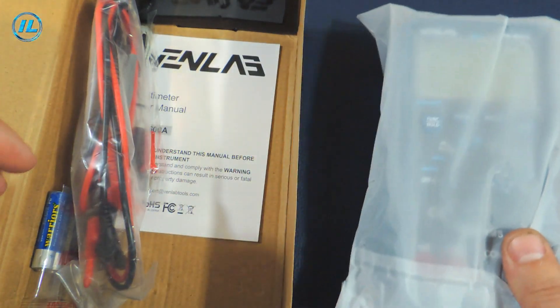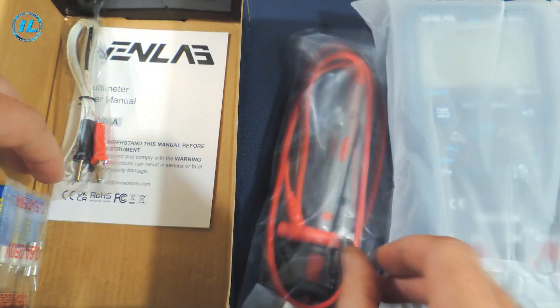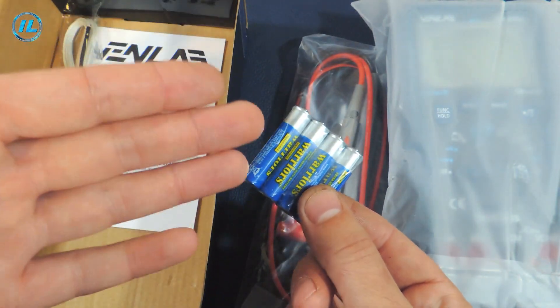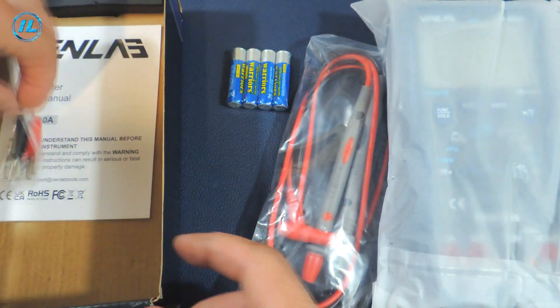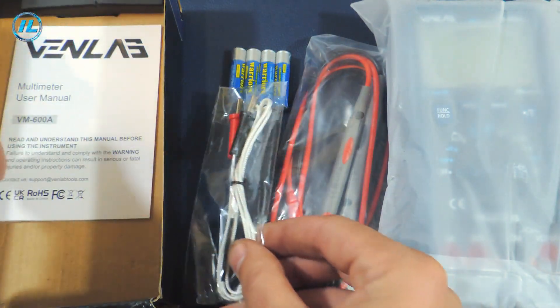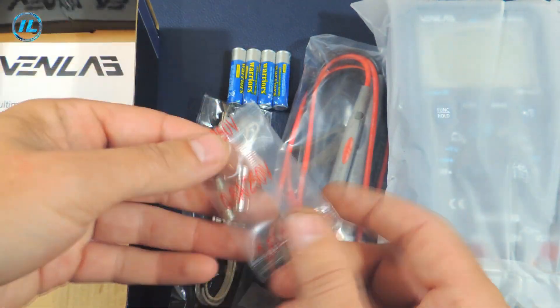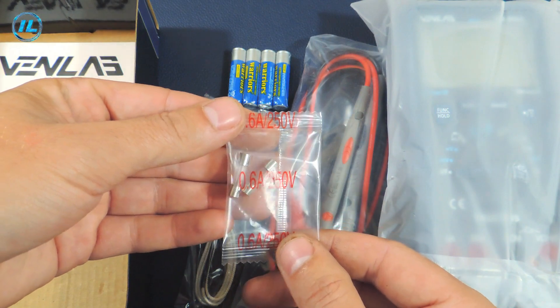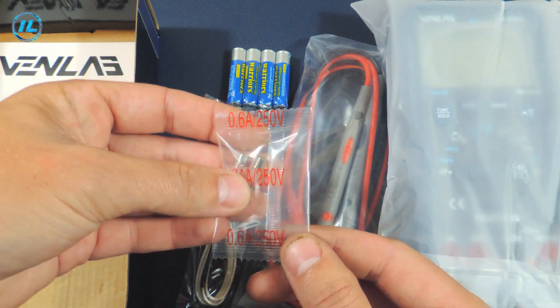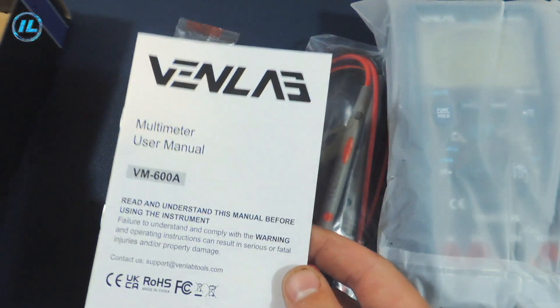The multimeter itself, probes, batteries, a nice bonus. A thermocouple for measuring temperature. Two 0.6 amp fuses and the user manual.